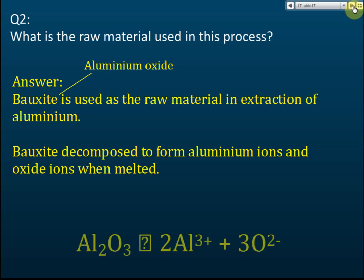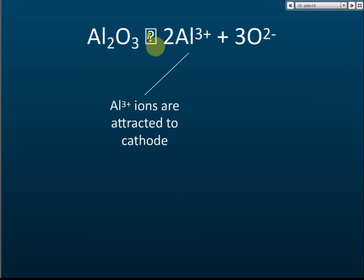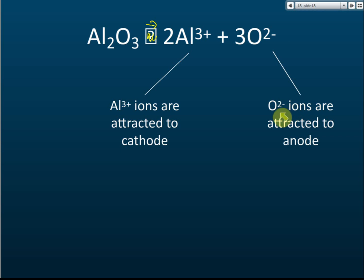When Bauxite is heated, it melts and decomposes to form Aluminium ions and Oxide ions. These ions are then free to move. The positive Aluminium ions are attracted to the cathode, and the negative Oxide ions are attracted to the anode.